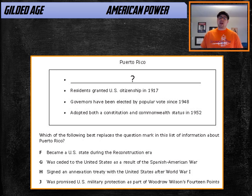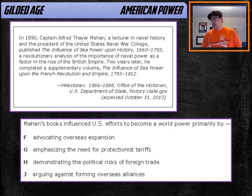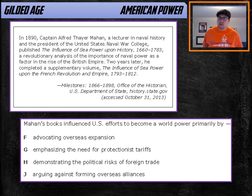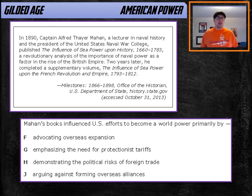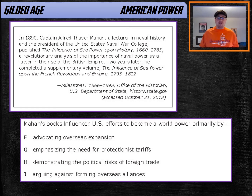America becoming powerful and gaining overseas territories — three different questions with very similar answers. I do want to mention one possible question type I've seen rarely but enough to mention: Alfred Thayer Mahan, author of 'The Influence of Sea Power upon History.' He influences Theodore Roosevelt and this attitude that America needs to expand its military, especially its navy, and become an imperialist power. If given a quote asking how Mahan's book influenced US efforts to become a world power, the answer is F: advocating overseas expansion.